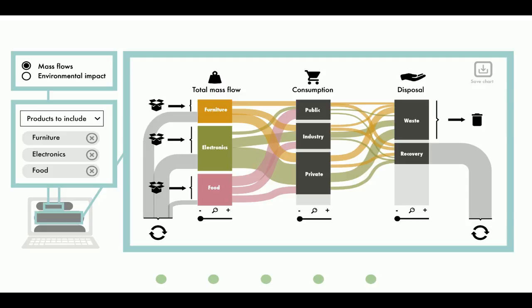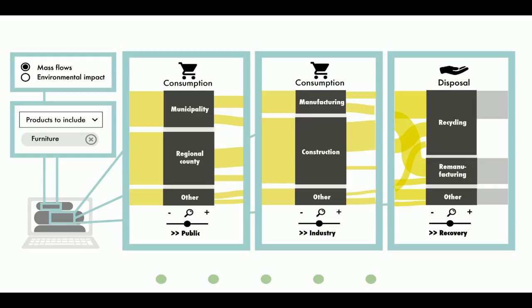It is still possible to look at multiple product types in the same diagram, allowing the user to compare magnitudes between different products — for instance furniture, electronics, and food compared next to each other. By clicking on the different gates the user can access more detailed information; for instance, clicking on 'public' shows the consumption of the municipal organization separately from the regional county. The same can be done for industry, giving information about which business sectors consume certain products, making it easier to identify actors to engage when targeting certain product flows. You can also zoom into disposal to review what type of recovery is being applied, valuable in the municipality's strive to climb the waste hierarchy.